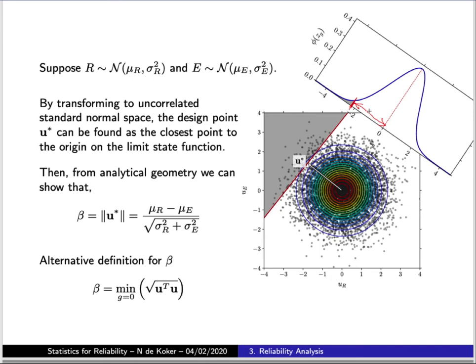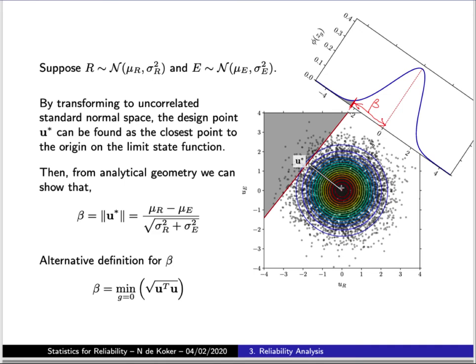That distance of closest approach, denoted beta, can be calculated geometrically using the parameters used to transform to standard normal variables, yielding an equation identical to the one derived earlier assuming R and E are normally distributed. This suggests an alternative definition for beta: the distance of closest approach in standard normal space of the limit state function to the origin — the smallest distance along the line where G = 0 from the origin.